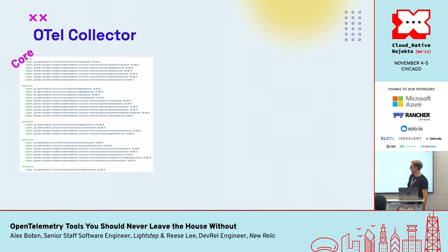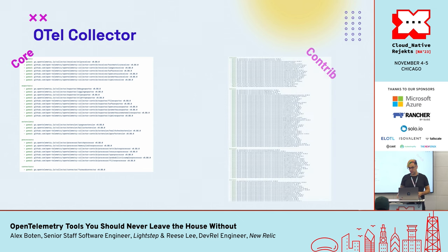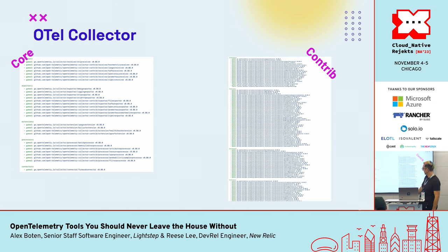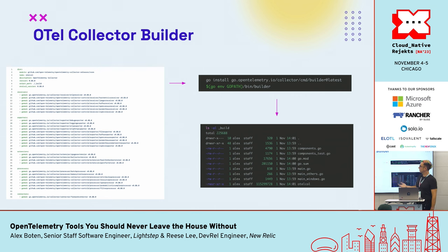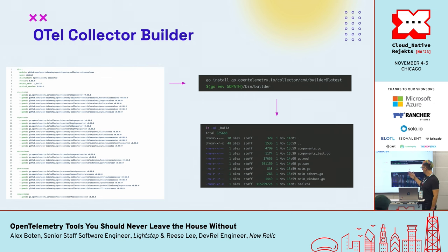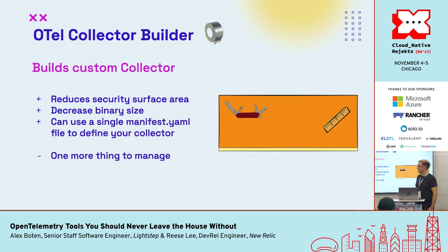The contrib distribution has so many components that the font was too small to fit them all on the slide — it's cut off at receivers, with a whole list of other components missing. If you don't want the full contrib distribution but care about a specific component, there's the OTEL Collector Builder, which allows you to specify a manifest file and run a Go command to generate a custom binary. The builder is great if you want your own version of the collector that's just right for you, and it can dramatically reduce the size of the binary produced.